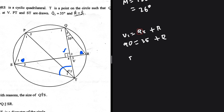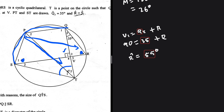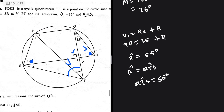So R should equal 55 degrees. I'm determining R because R is subtended by arc QS — that same arc also subtends angle QTS. Since they are subtended by the same arc, angle QTS equals angle R, so QTS equals 55 degrees.